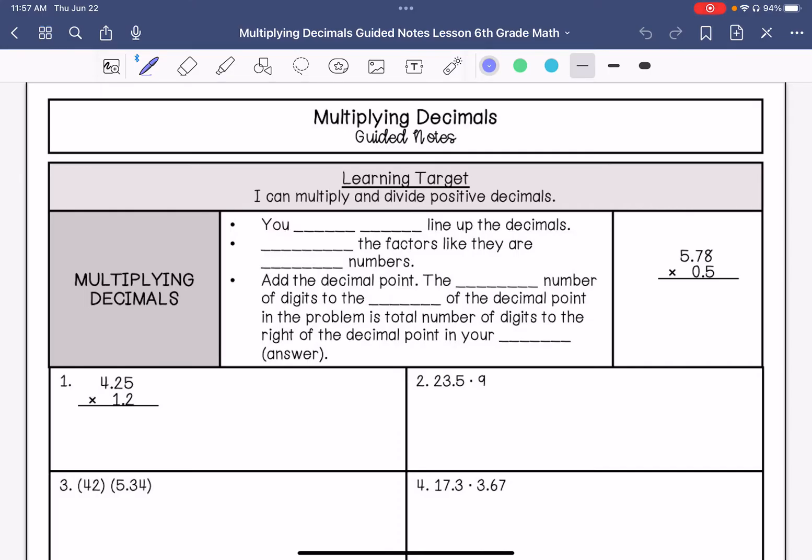So when you multiply decimals, you do not line up the decimals like you would if you subtract or add decimals. You are going to multiply the factors like they are whole numbers. Then you are going to add the decimal point. To figure out where to add the decimal point, you will look at the total number of digits to the right of the decimal point in the problem. And that is the total number of digits to the right of the decimal point in your product.